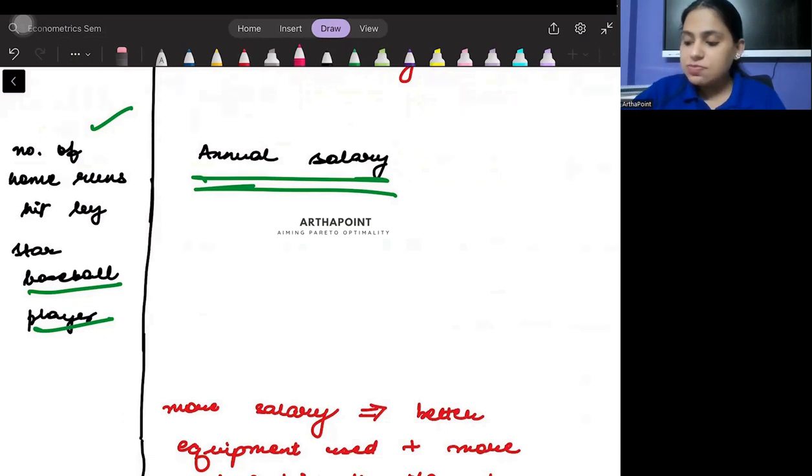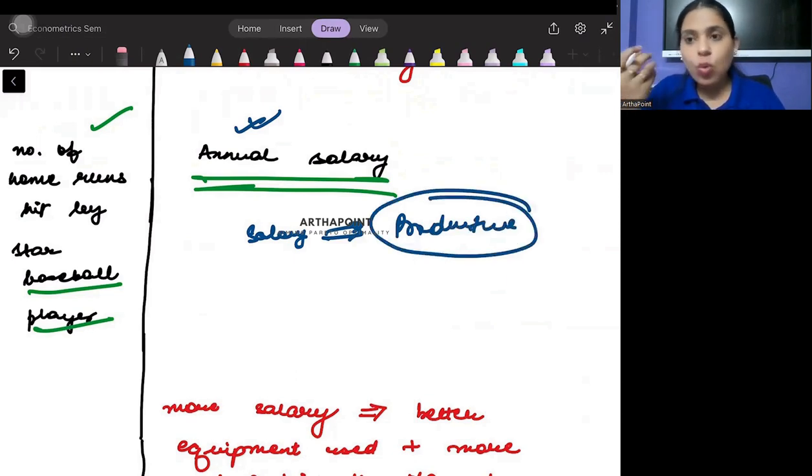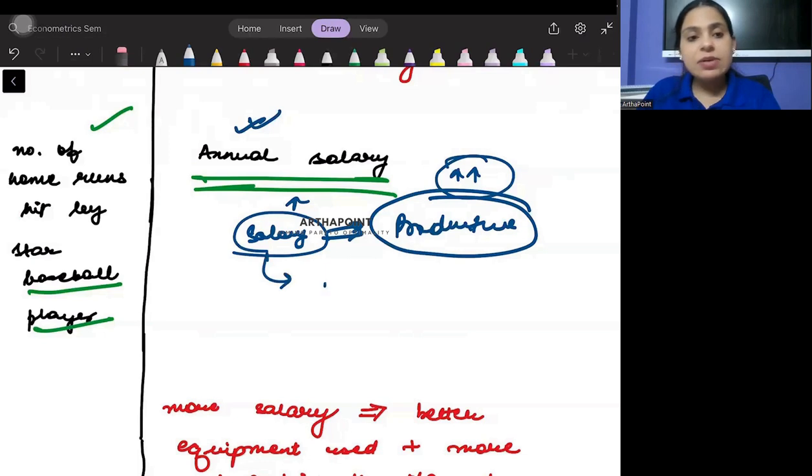If there is more salary, salary is only increasing for those people, for those players who might have been more productive, because you want to retain those players. Which means that when you're increasing the salary it is indicated that in the past they have played well, they have had high productivity and it means that they will be making more runs in the future.